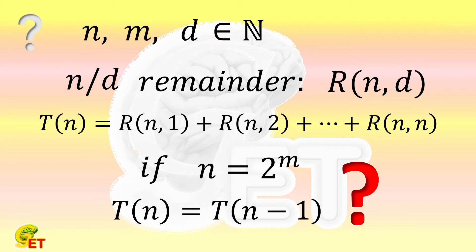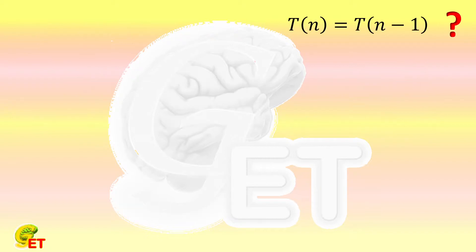Before we prove it, let's take a closer look at what this conclusion actually means by using an example. Let's choose m to be equal to 4. Then n is equal to 2 to the fourth power, which is 16. n minus 1 equals 15.